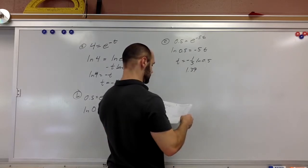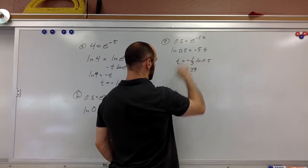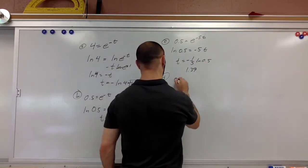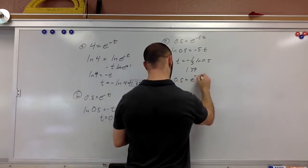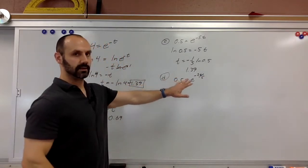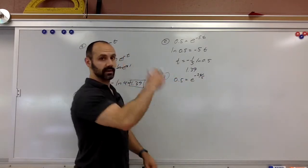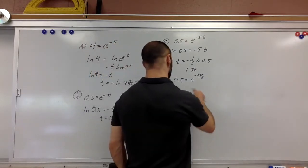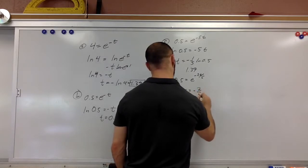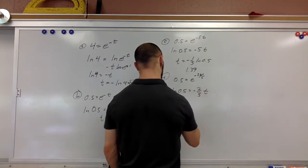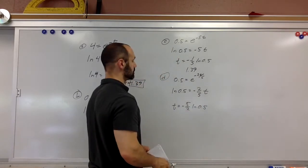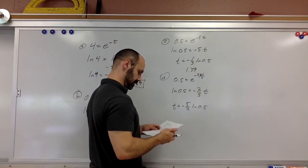It all works out. Next: 0.5 equals e to the negative 2t over 5. We're working through these because we'll encounter this type of expression in our equations when we do calculus with them. Taking the natural log: natural log of 0.5 equals negative two-fifths t, so t equals negative five-halves times natural log of 0.5, which gives us 1.73.